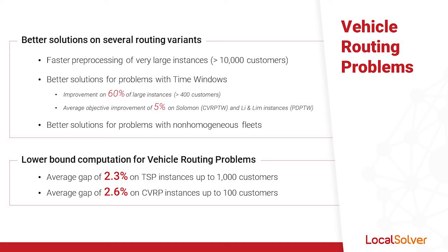Local Solver now displays an average gap of 2.3% on travelling salesman problem instances with up to 1,000 customers. Most instances with less than 100 customers are now solved to optimality. On the capacitated vehicle routing problem, the average gap on instances with up to 100 customers is now 2.6%.